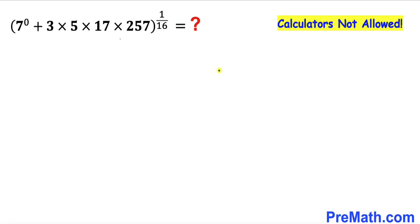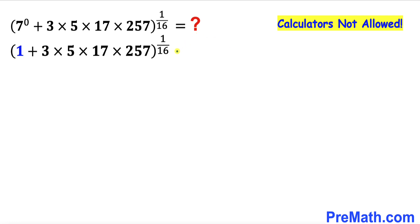Let's go ahead and get started with the solution. The very first thing we are going to do is focus on 7 to the power 0. This is always equal to 1. As you can see in this next step, I have replaced 7 power 0 by 1 and the rest is exactly the same.